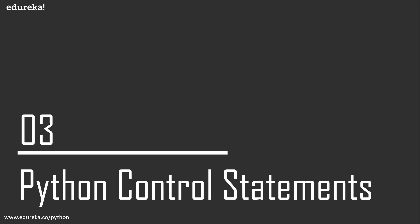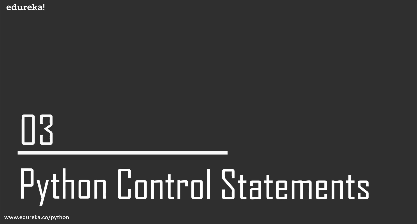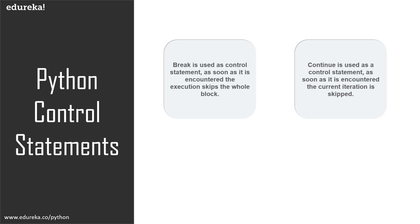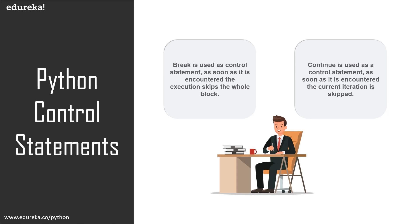Now talking about Python control statements — we can also use them inside a while loop. There are basically two control statements: break and continue. Break, when encountered in a loop, will skip the remaining iterations and move execution out of the loop. Continue is similar, but the difference is that only the current iteration is skipped while the rest of the iterations will still be executed.